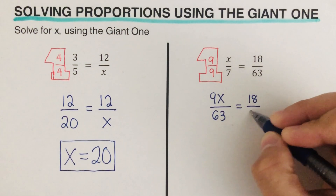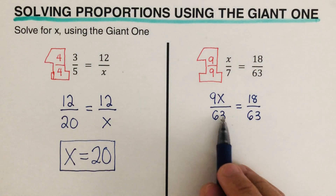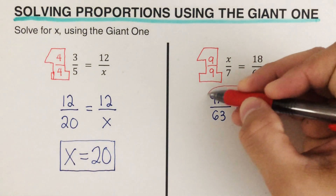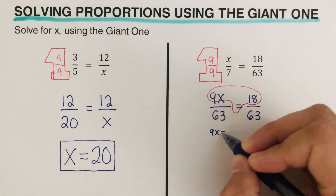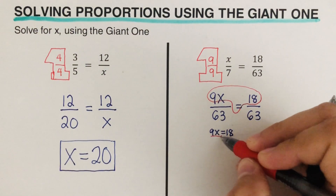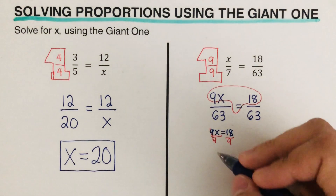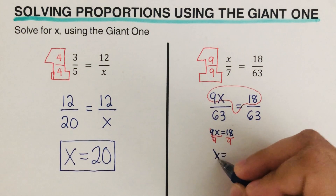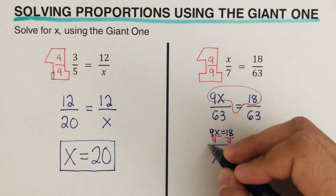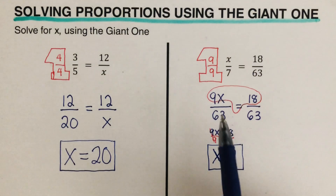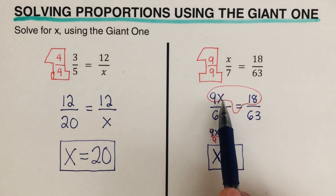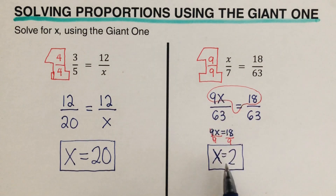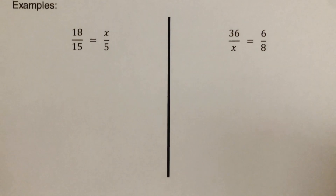That equals 18 over 63. Both denominators are the same, which means the numerators are equal to each other. So 9x equals 18. Dividing both sides by nine gives x equals two. Or we can simply ask: nine times what number equals 18? That number is two, so x equals two.